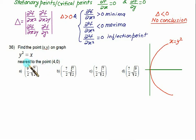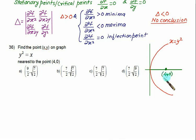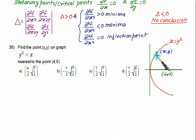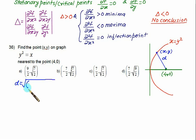In this case we are given a parabola which is symmetrical about the x-axis, that is y² = x, and we are given one point (4, 0). We want to find the point on the parabola nearest to (4, 0). So let's consider a point (x, y) anywhere on the parabola.